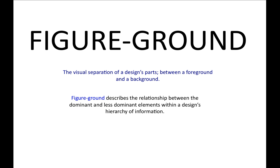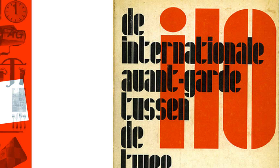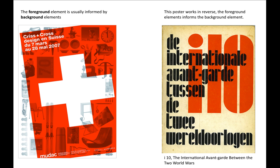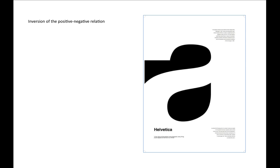Figure ground is the visual separation of a design's parts between a foreground and a background. It describes the relationship between the dominant and less dominant elements within a design's hierarchy of information. The foreground element is usually informed by background elements, though some posters work in reverse, where foreground elements inform the background. Figure ground will often correspond to negative space and positive shape, and can involve an inversion of the positive and negative relationship.